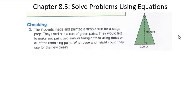Let's do this one right here first. The question asks: the students made and painted a simple tree for a stage prop. They used half a can of green paint. They would like to make and paint two smaller triangle trees using most or all of the remaining paint. What base and height could they use for the new trees? A couple of things to point out here. It says what base and height could they use. There are many different correct answers for that question, but only a few of them will actually be correct. Please don't think just because you come up with an answer it is correct. You must go back and check.